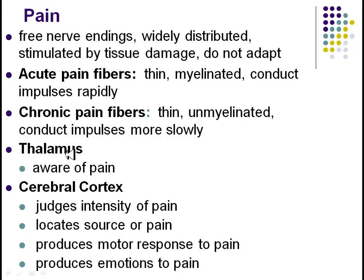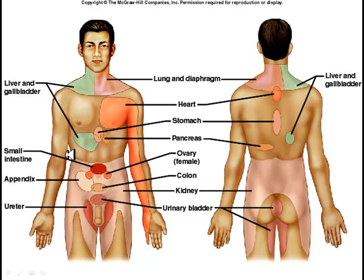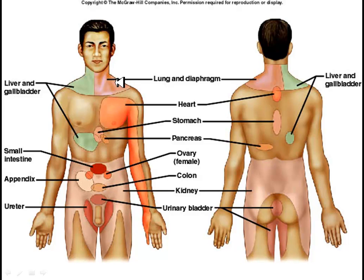Looking at common places pain gets referred: for example, during a heart attack, pain can radiate down the left arm. Appendicitis is referred to the lower right region, which is roughly where the appendix sits. Ureter pain can run to the insides of the legs, and pain from the lungs can radiate through the neck and the trapezius muscle. Ovarian pain is pretty localized, as it's right where the ovaries would be in a female.